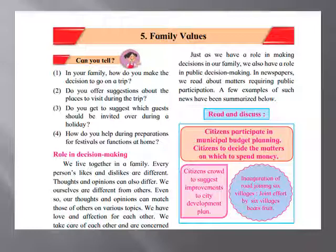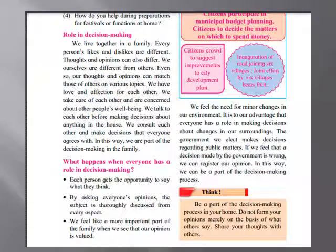Role in decision making. We live together in a family. Every person's likes and dislikes are different. Thoughts and opinions can also differ. We have different ideas regarding different things, so we discuss about it. Even so, our thoughts and opinions can match those of others on various topics. We have love and affection for each other. We take care of each other and are concerned about other people's well-being. We talk to each other before making decisions about anything in our house. We consult each other and make decisions that everyone agrees with. In this way, we are part of the decision making in a family.